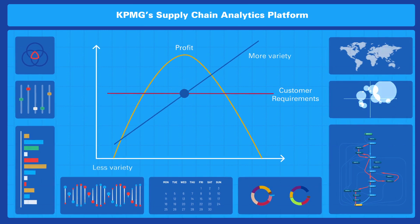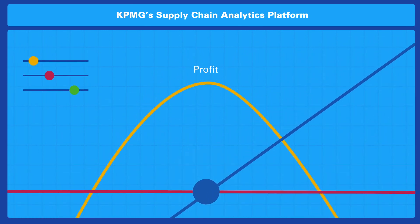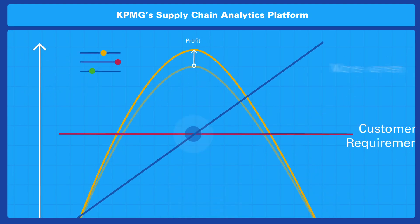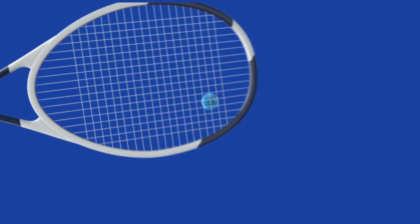In fact, companies that have used KPMG's supply chain analytics have seen significant increases in profits in just the first six to nine months. And that's a very sweet spot indeed.